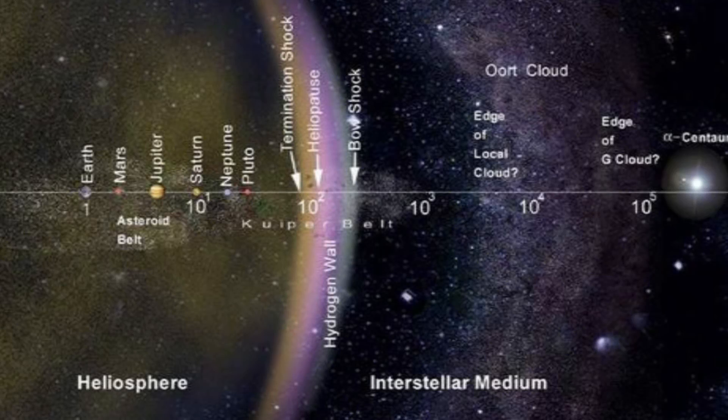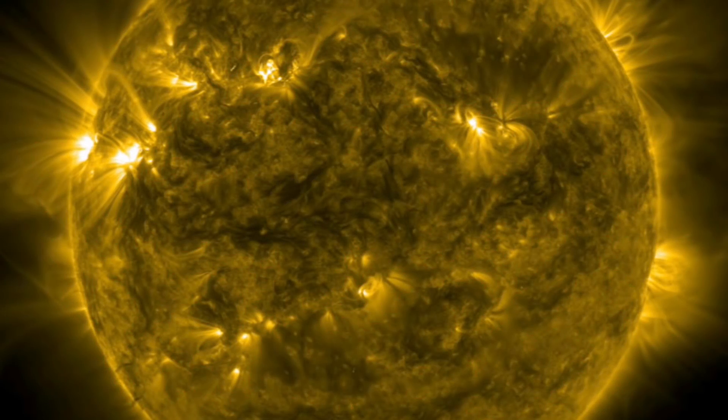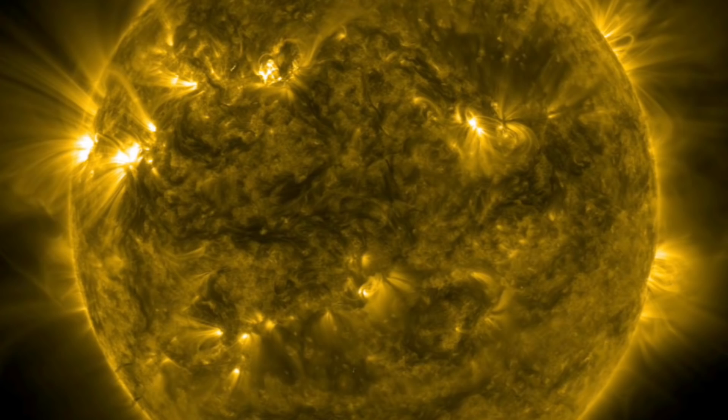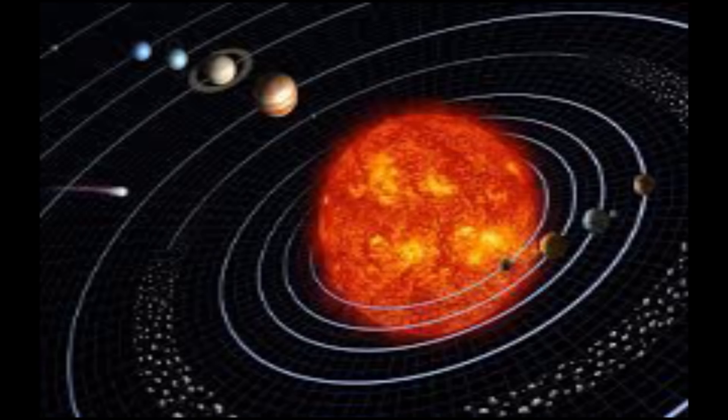Everything in our solar system that has mass has an effect on everything else, the object having the greatest known effect obviously being the Sun. Something smaller, such as the Earth, does affect the Sun as well, however, to a much smaller degree. The Earth, Mars, and even our solar system's giants, Jupiter, Saturn, Uranus, and Neptune, are tossed casually to and fro by the mammoth gravitational power of our Sun.